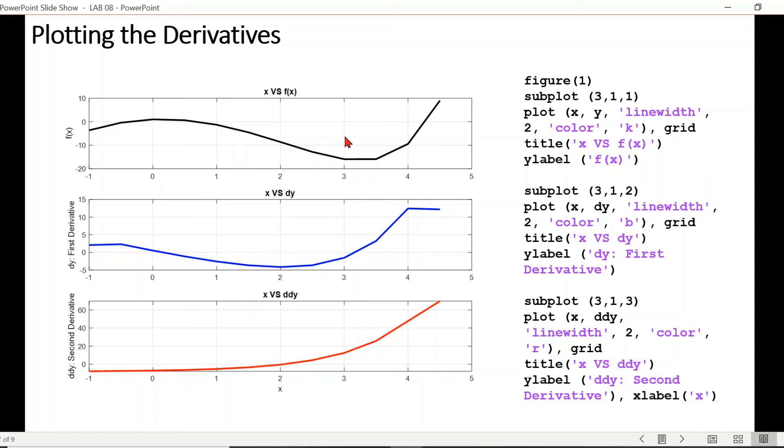Since there are three plots altogether, by the brackets of this plot command, we mention the position of the plot. For example, three refers to the total number of plots. Then one refers to the figure number which is one, and the next one is actually the plot itself.